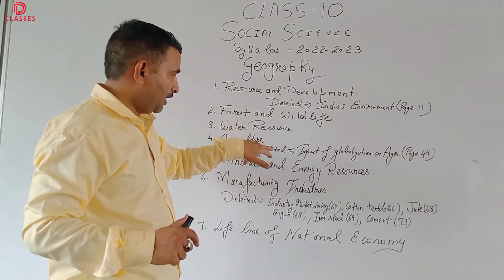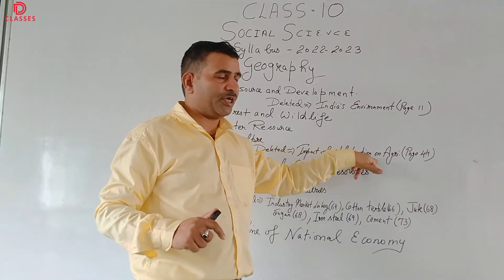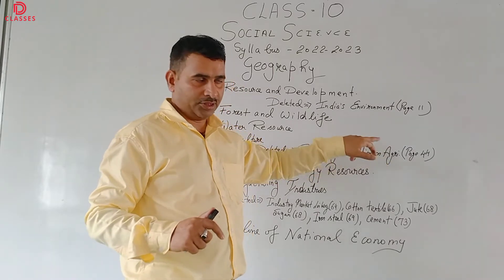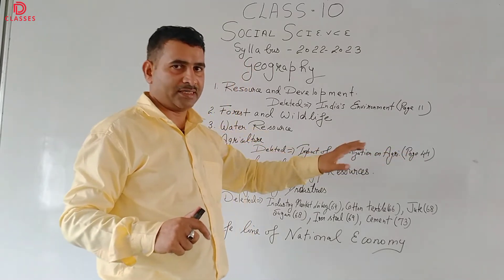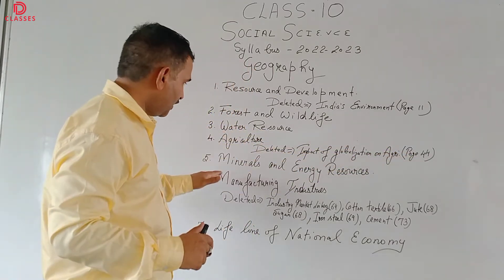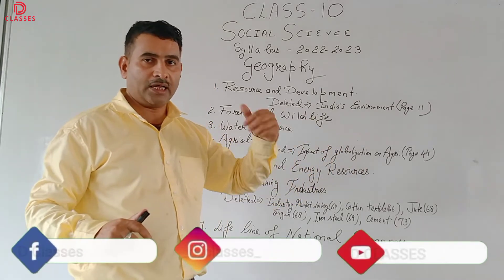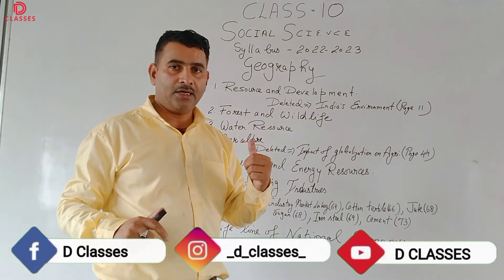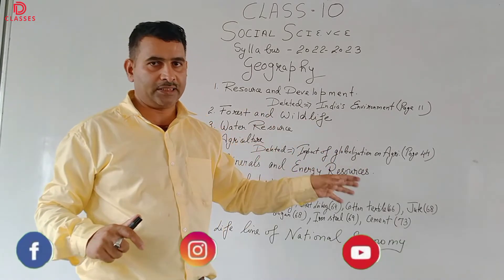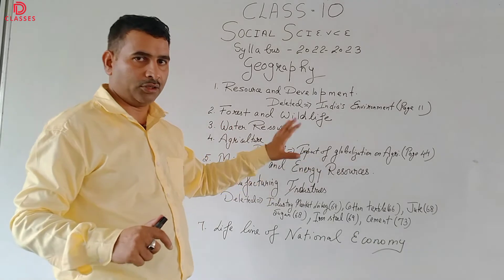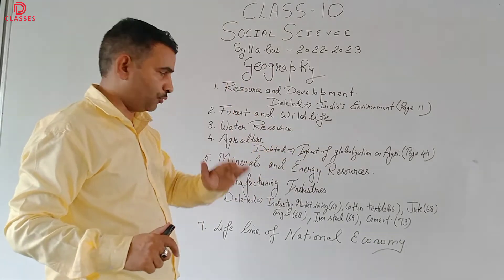Agriculture: deleted content is the impact of globalization on agriculture — this is on page number 44 and this content is deleted. Mineral and Energy Resources: the full chapter is included this year. Last year only map-work was done, but this year all the contents have been included for this and the upcoming year as well.